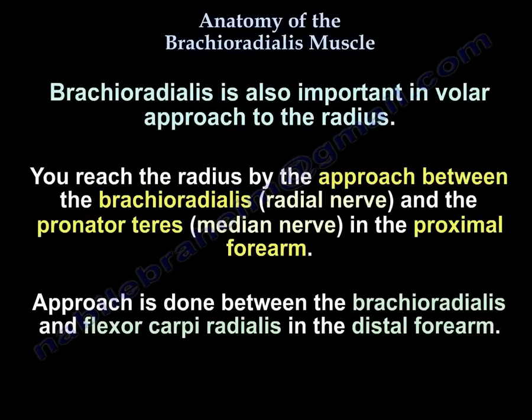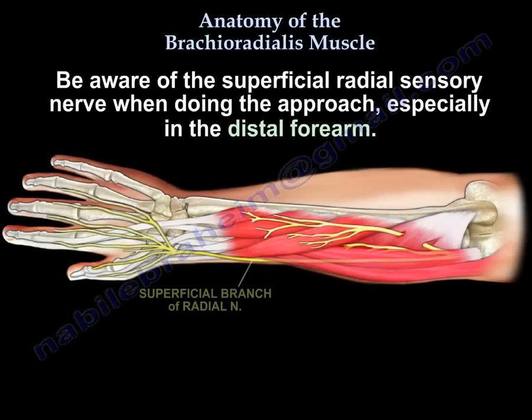The brachioradialis is also important in the volar approach to the radius. You reach the radius by the approach between the brachioradialis, which is innervated by the radial nerve, and the pronator teres, which is innervated by the median nerve, in the proximal forearm — and between the brachioradialis and the flexor carpi radialis in the distal forearm. Be careful of the superficial radial sensory nerve during that approach, especially in the distal forearm.